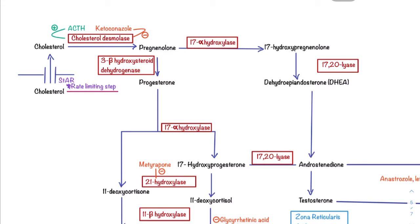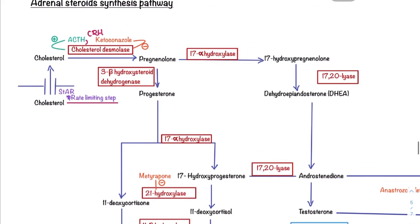Once it enters, it will be acted on by the enzyme cholesterol desmolase, which is stimulated by ACTH or CRH from the hypothalamus-pituitary axis. There's an antifungal drug called ketoconazole that can inhibit this enzyme.